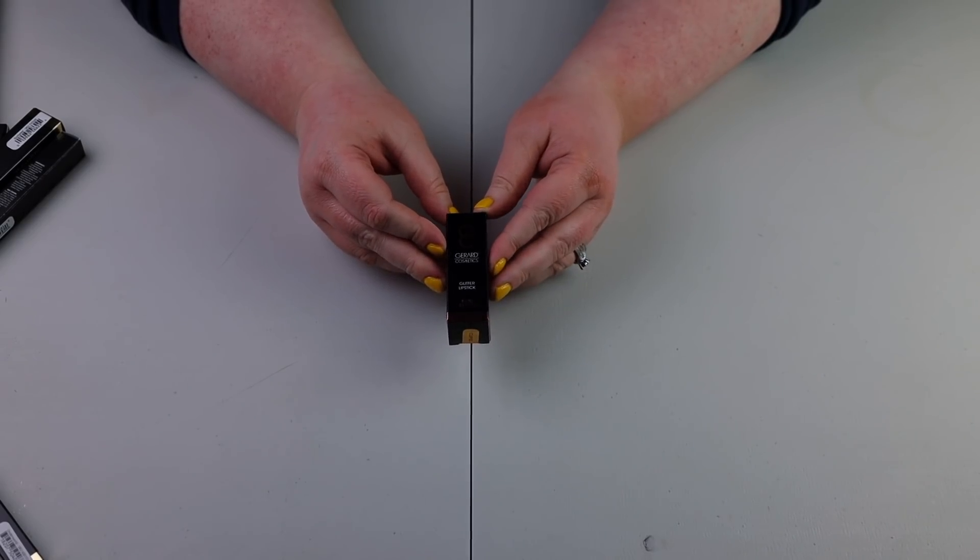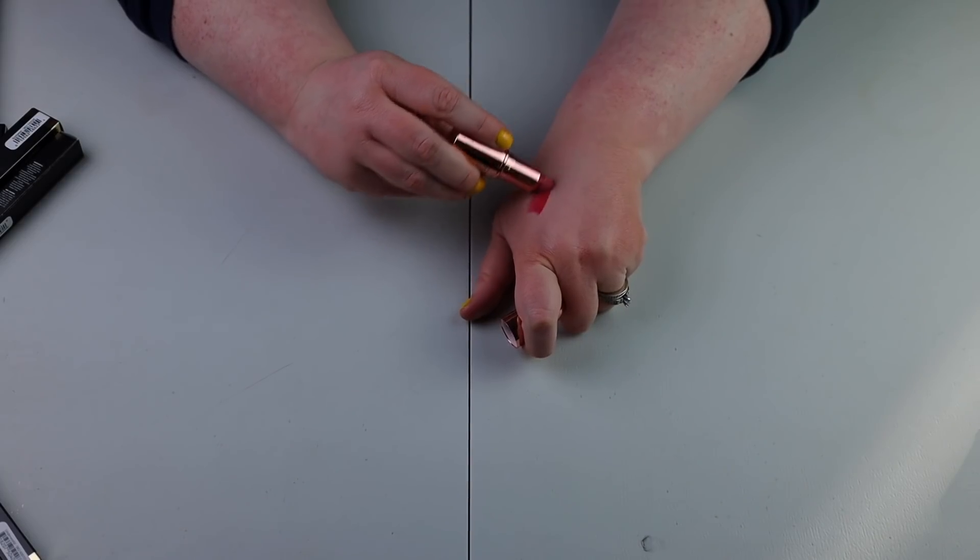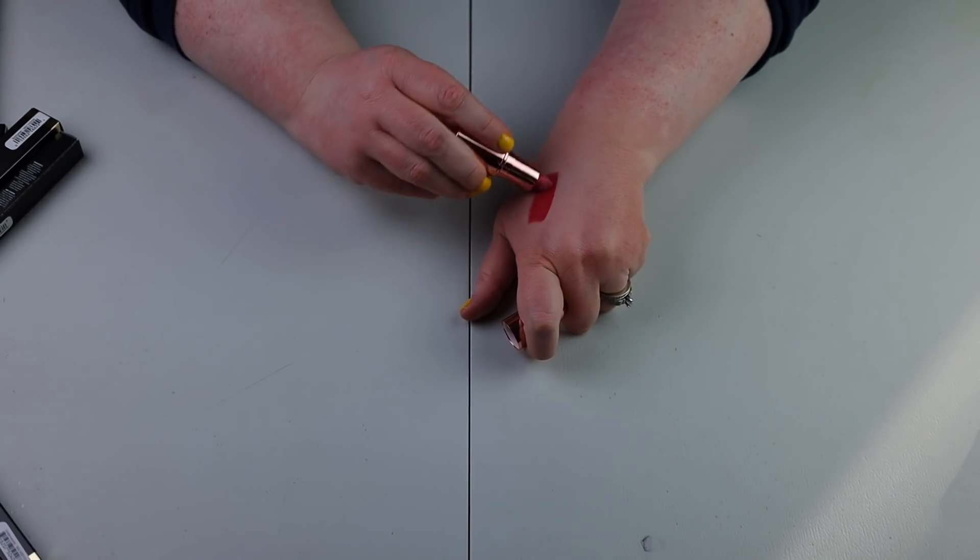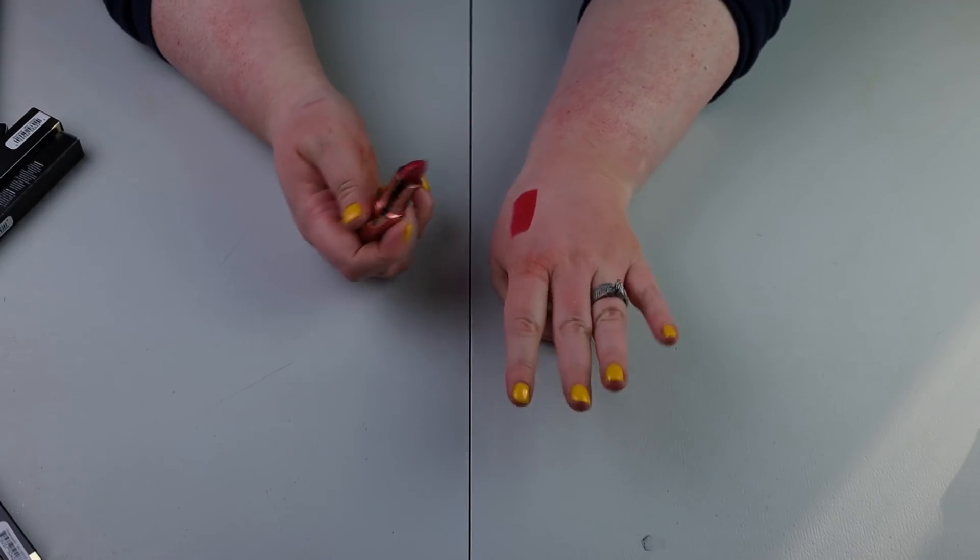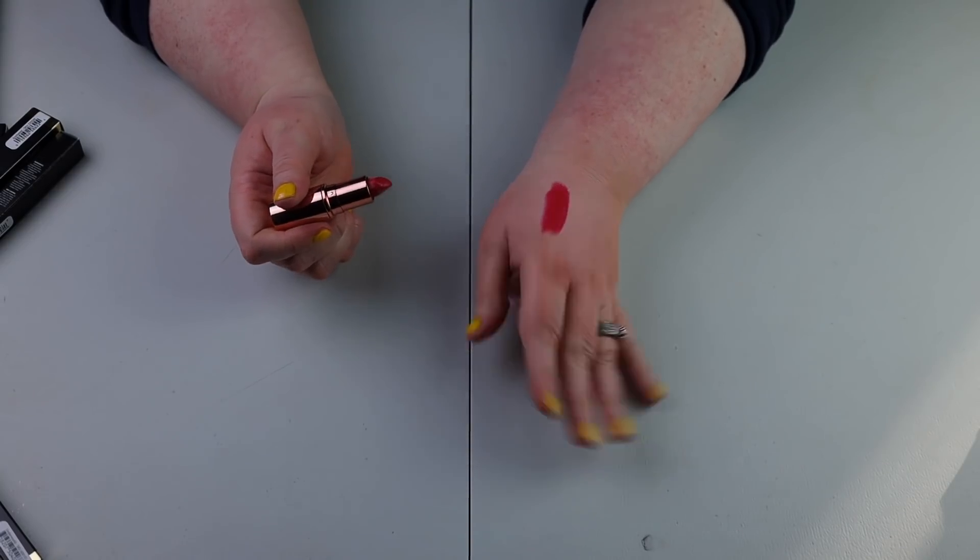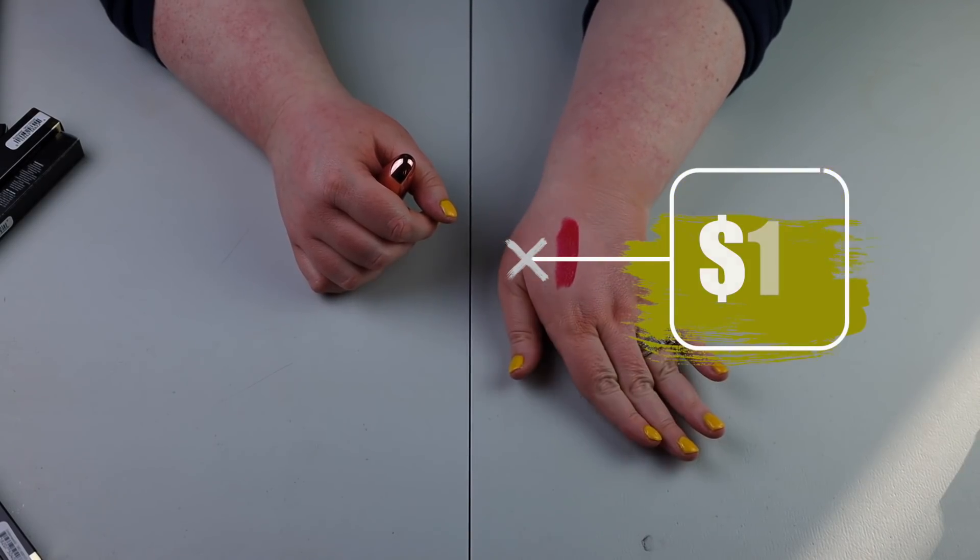So now we're moving on to some lip products and this is the glitter lipstick. This is a very, oh, that's a color. All right. This is a little bit too bright for me. This is not my cup of tea. This is very much, my name is Barbara. My kids are grown and I have a successful real estate agency. Don't fuck with me.